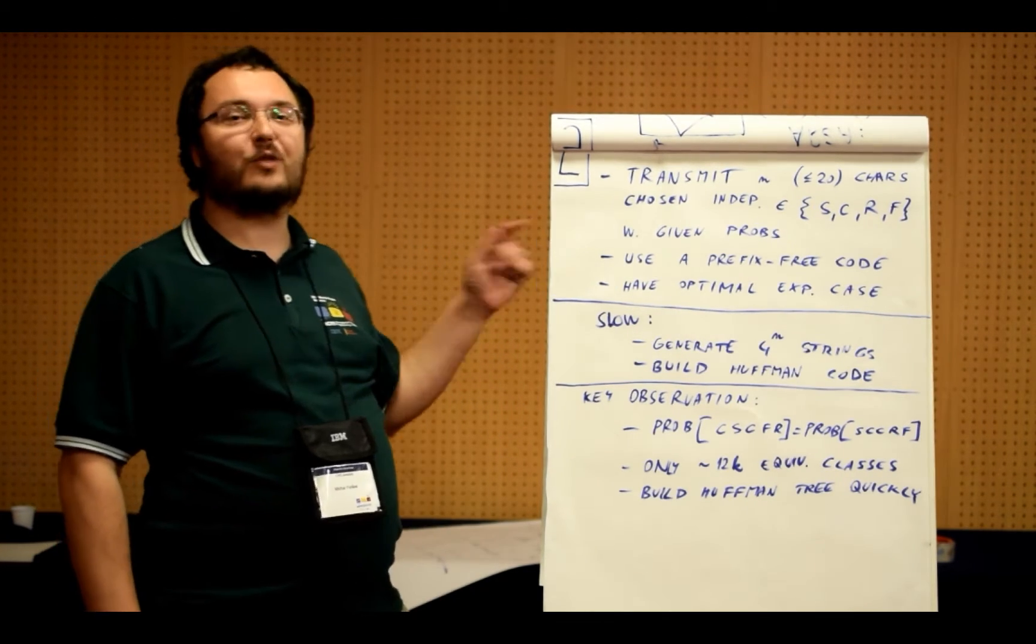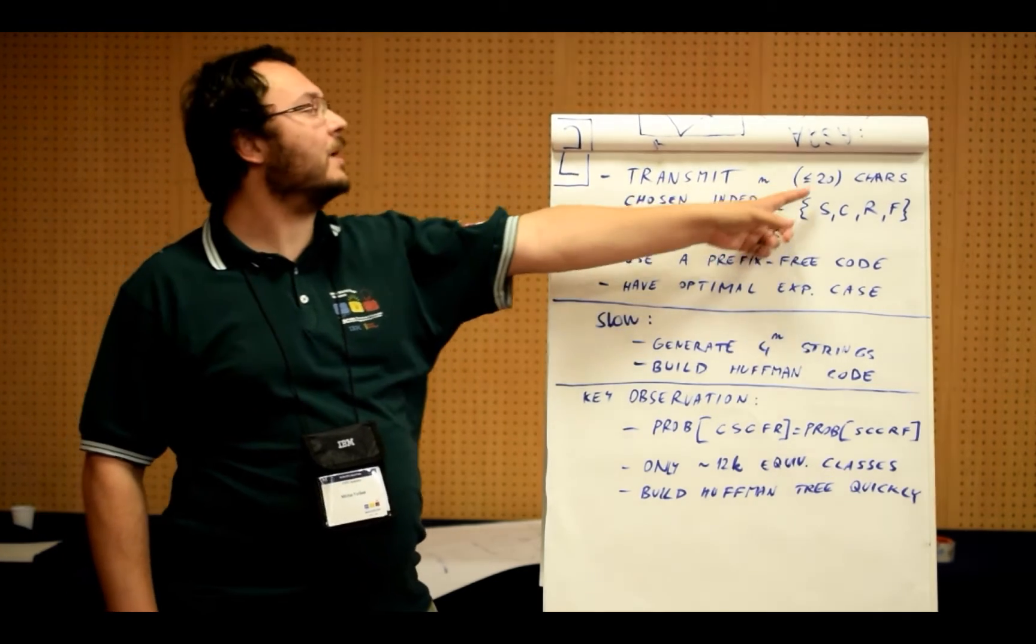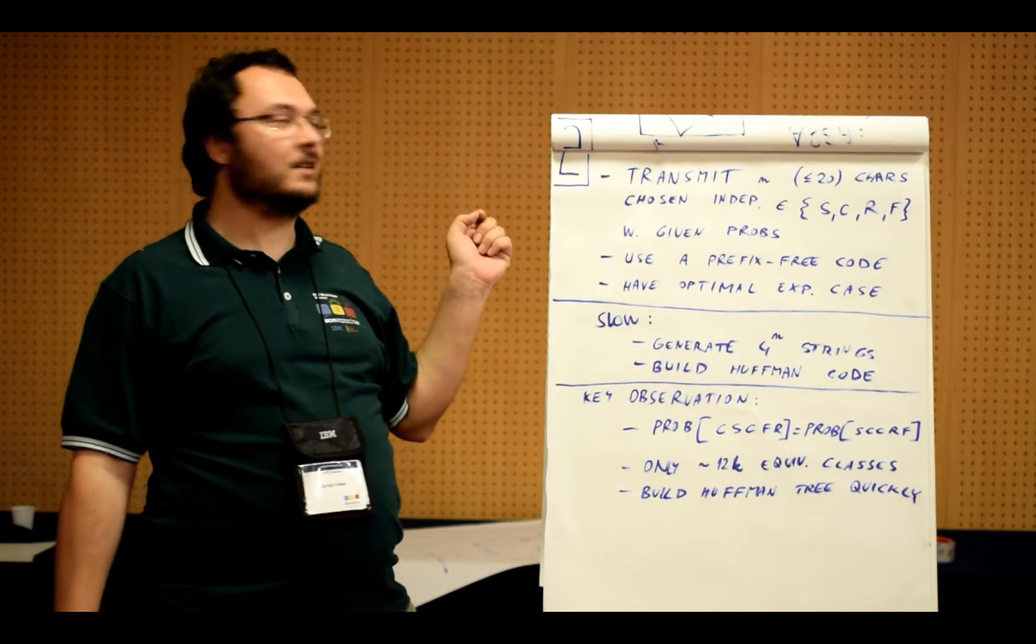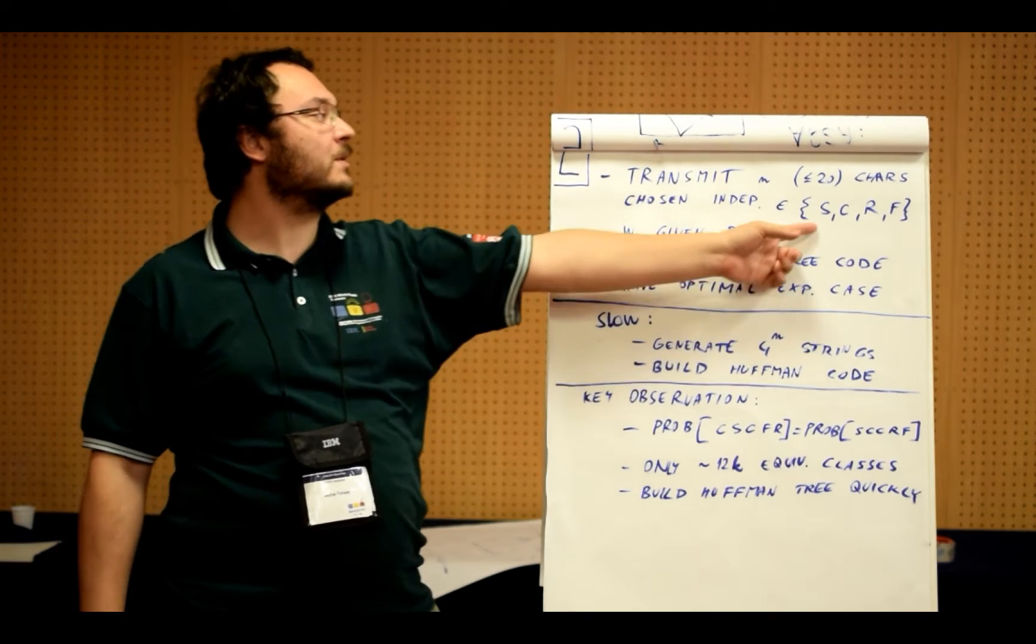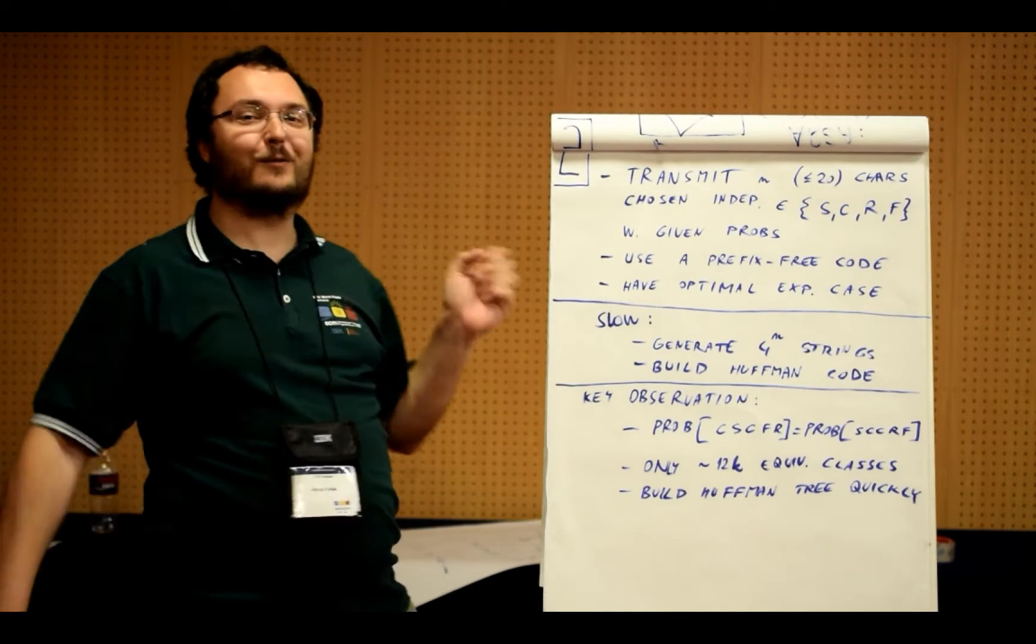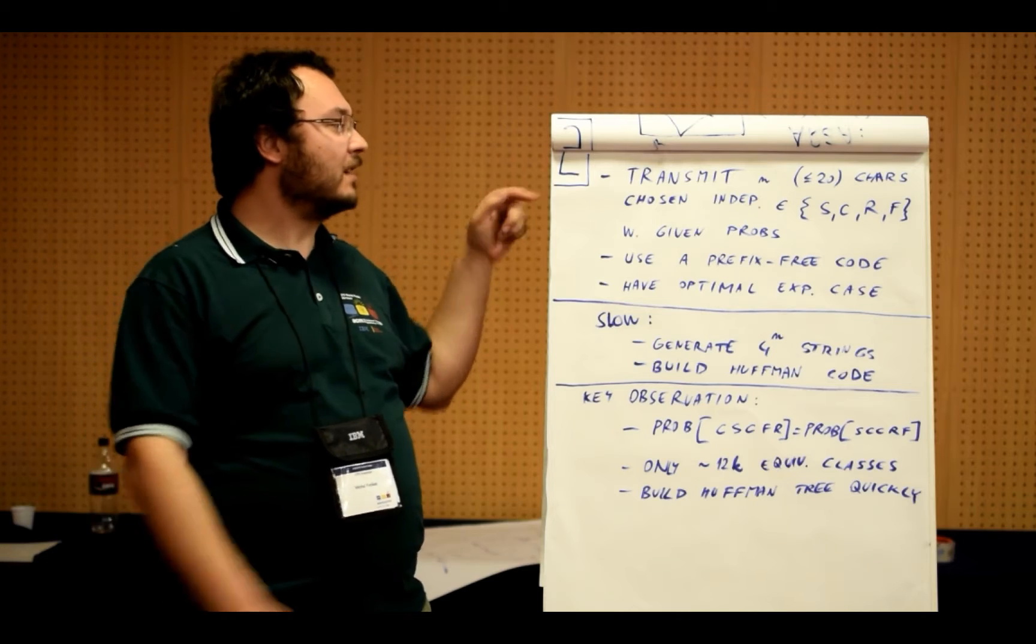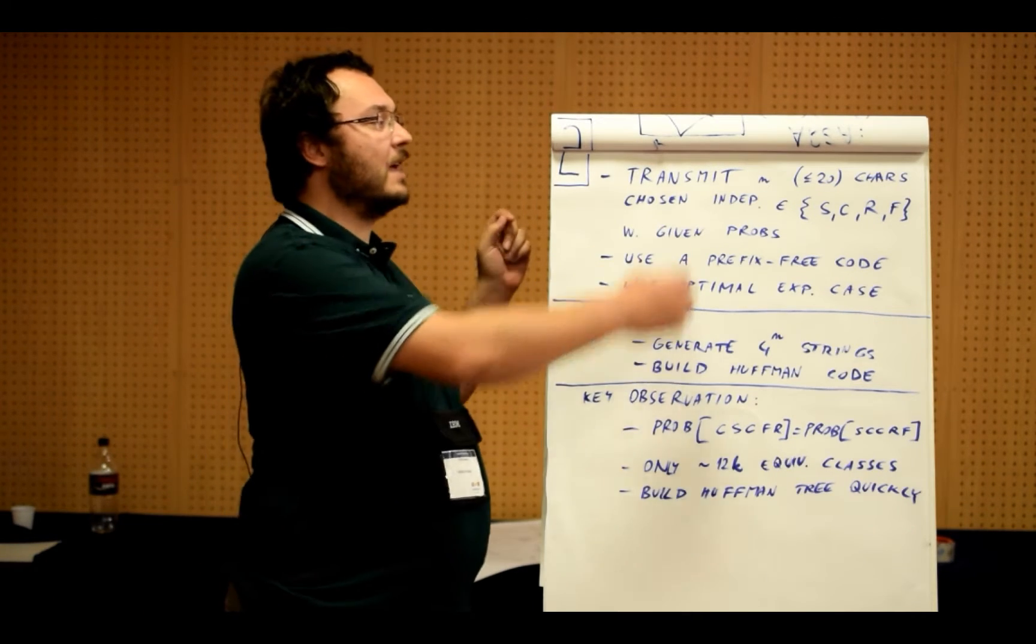In this problem we are transmitting a weather report, which is a sequence of n characters and can be up to 20. The characters are different types of weather chosen independently from sunny, cloudy, rainy, and frogs. So we have these funny weather frogs, and each of these weathers on each particular day has a given probability, so the probability is the same for each day.